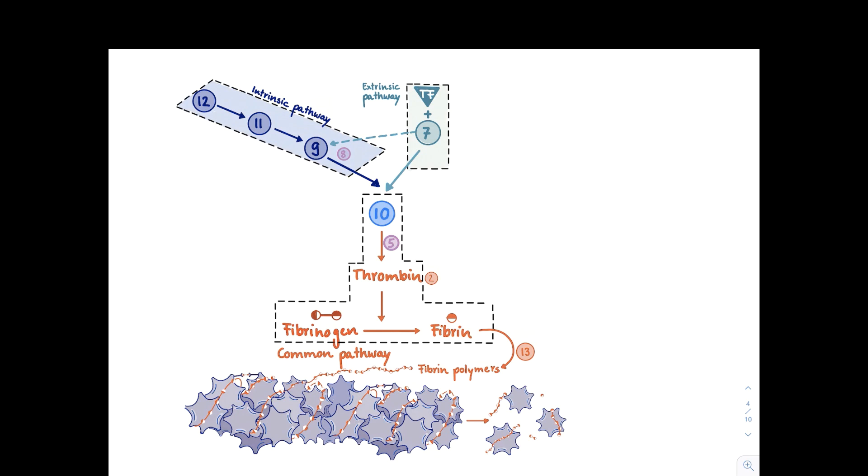We also should be aware that eventually this clot also needs to be degraded and this is done by a process called fibrinolysis. So there are enzymes that can cut off these fibrin strands so that we can dissolve the clot. This concludes the video on the coagulation pathway.